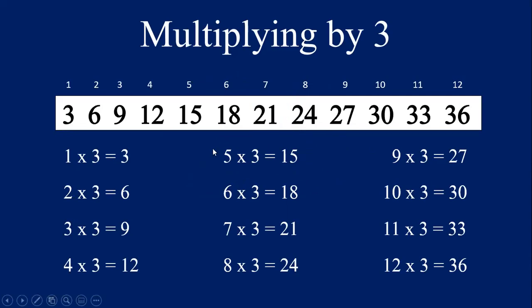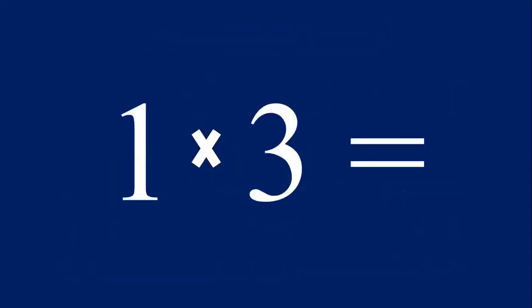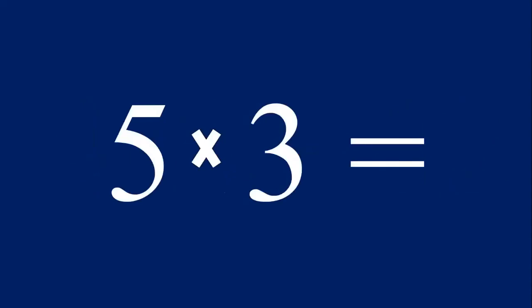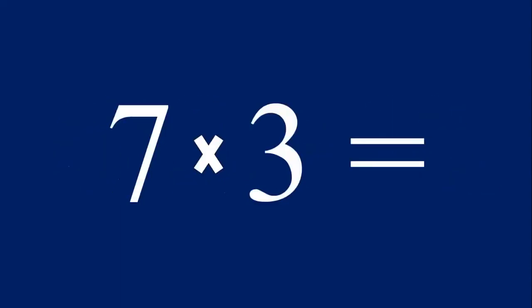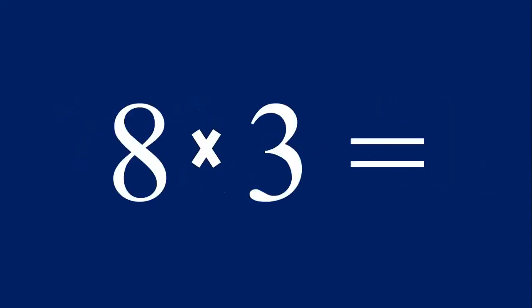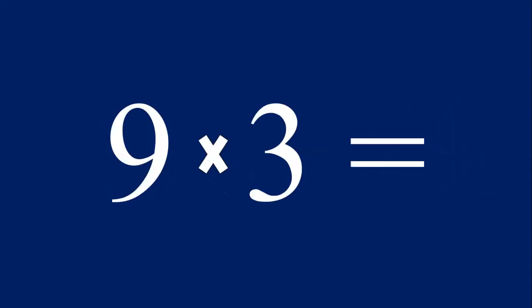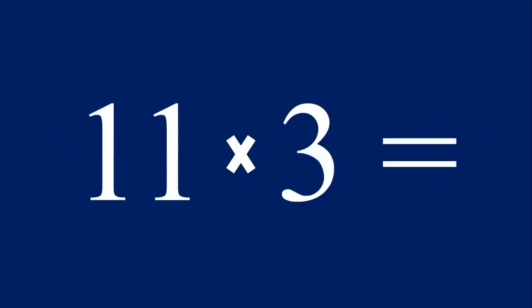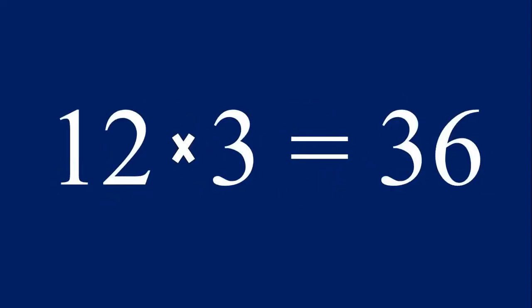Now let's multiply one through 12 by the number three. Let's say the equations and the answers together. One times three equals three, two times three equals six, three times three equals nine, four times three equals 12, five times three equals 15, six times three equals 18, seven times three equals 21, eight times three equals 24, nine times three equals 27, ten times three equals 30, eleven times three equals 33, and 12 times three equals 36. Great job.